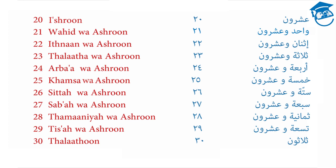27 is 7 and 20, or Seba Wahadashurun. 28 is 8 and 20, or Thamanya Wahadashurun. And finally, 29 is 9 and 20, or Tisah Wahadashurun.